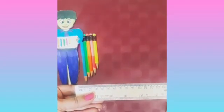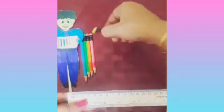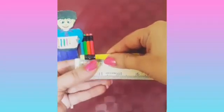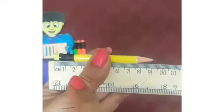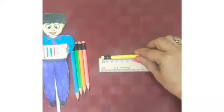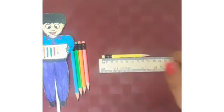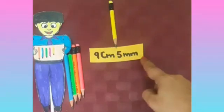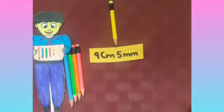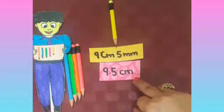First, we will measure the length of the first pencil. Look at the scale carefully. The length of the pencil is 9 cm and 5 mm. Now put the pencil down to measure its length. Yes, its length is 9 cm and 5 mm. We can also write it as 9.5 cm.